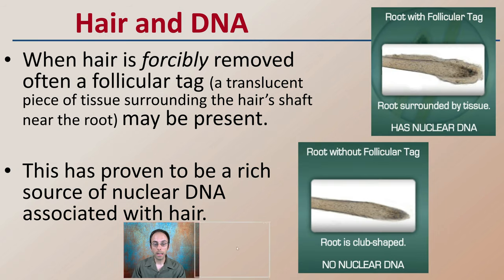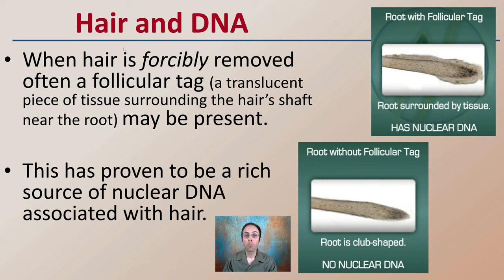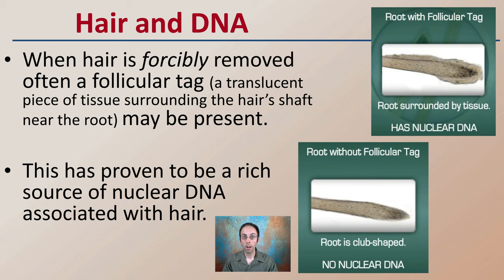In DNA specifically, when hair is forcibly removed, often a follicle tag — which is a translucent piece of tissue surrounding the hair shaft — may be present. It kind of looks like this right here; this is a root with a follicle tag. Other roots surrounded by tissue will have nuclear DNA, and this has proven to be a rich source of nuclear DNA associated with the hair.